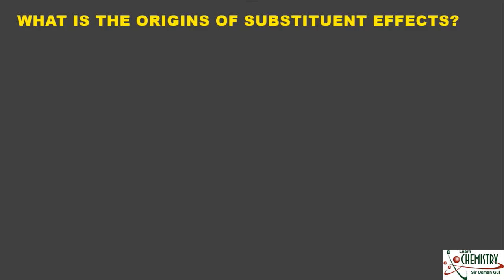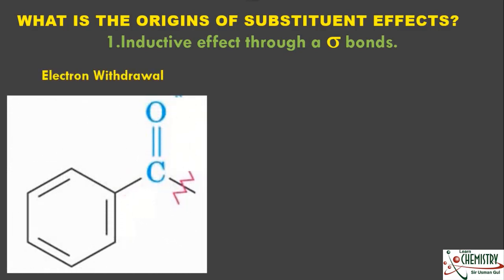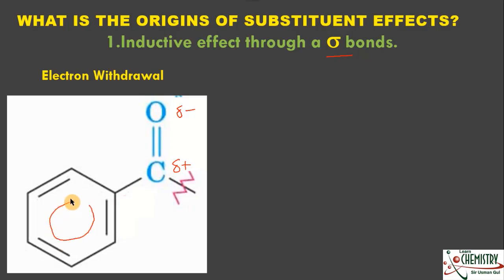Now, what is the origin of the substituent effect? Number one is called the inductive effect through the sigma bond. For a very good example of electron withdrawal: the most electronegative element in the molecule is oxygen, and it has a partial negative charge. The carbon directly connected with the benzene ring will have a partial positive charge. Because of polar bonds, electrons move through the sigma bonds — this is the inductive effect. Because of delocalization we have a charge density inside the benzene ring, and the electronegative atom outside the ring withdraws electrons toward itself.